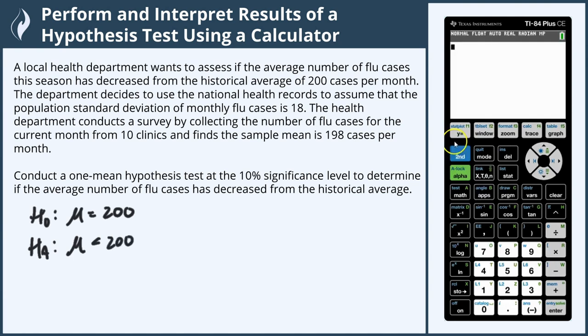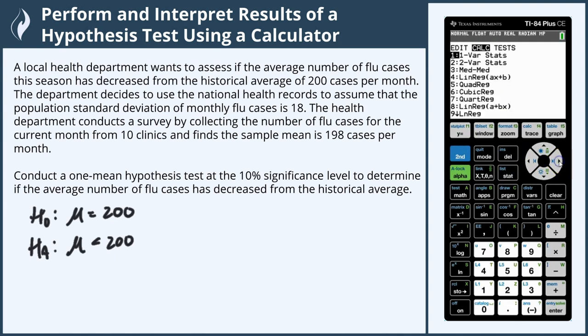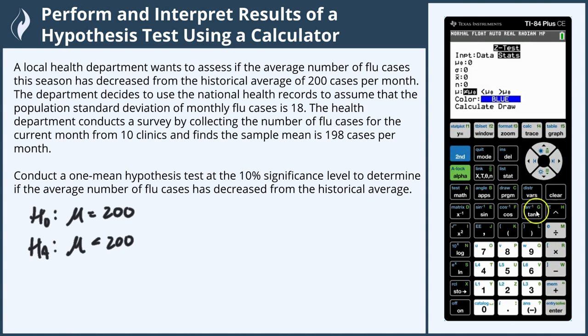Now we're going to use the calculator to determine the probability that the average that we got of 198 cases per month is low enough that we can reject the null hypothesis. We're going to go to the stat menu, then scroll over to tests, and select the first option, Z test. Here we're given stats — we don't have the original data, so we're going to go ahead and put in our stats.